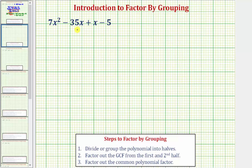So to factor by grouping, we don't want to combine these like terms, but notice how if we did, because negative 35x plus 1x is equal to negative 34x, the given expression is equivalent to 7x squared minus 34x minus five.